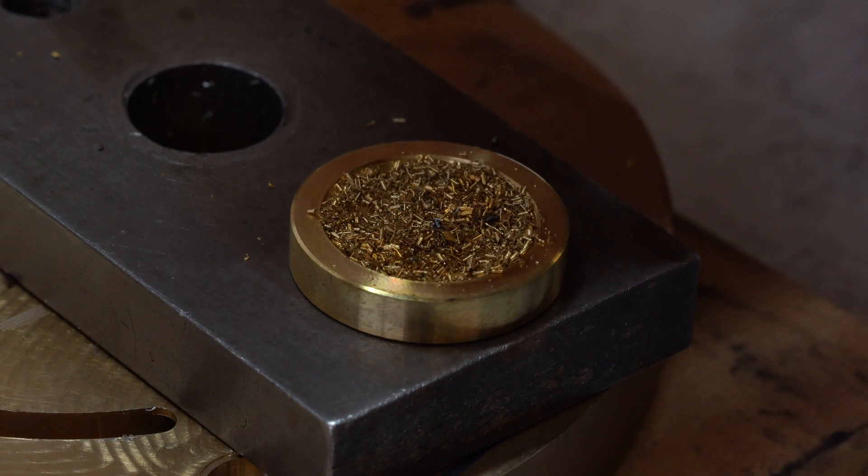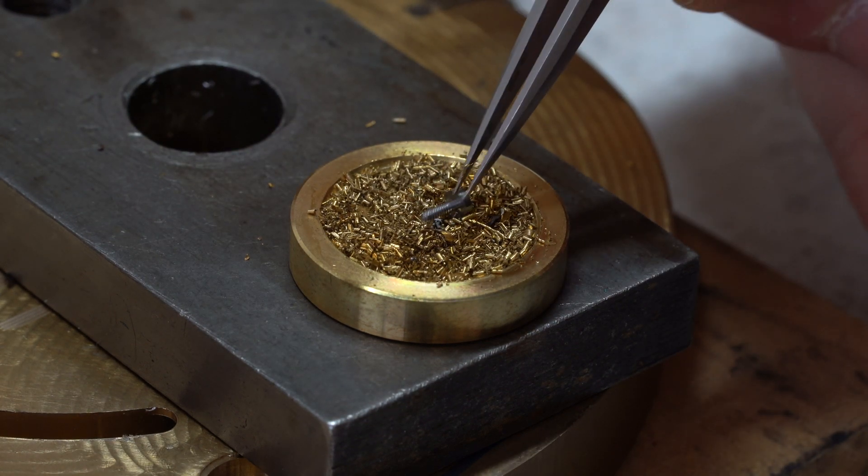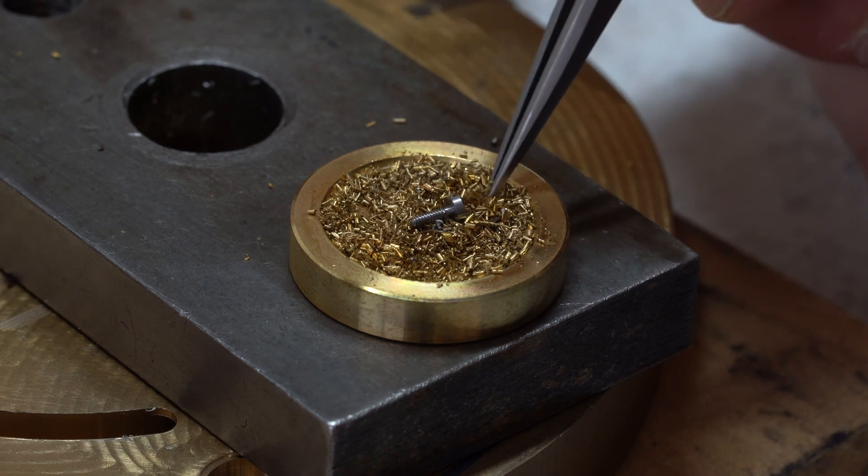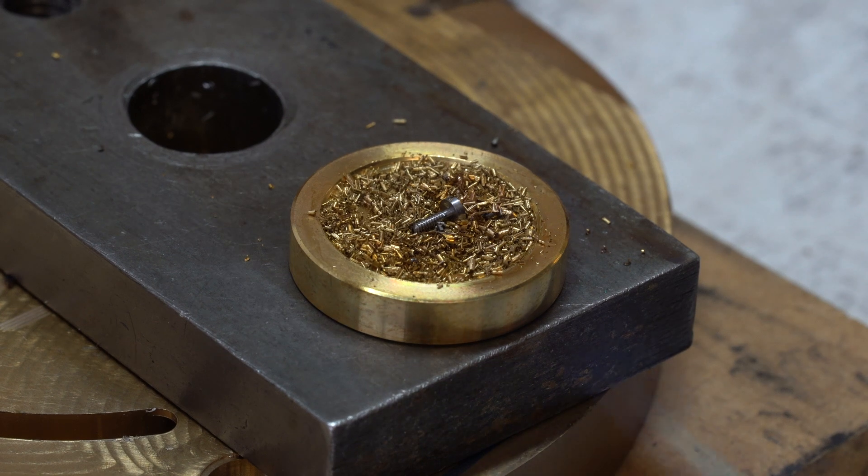Now on to tempering. So I've got some brass filings in a dish here and I want to bring the screw to a purplish brick red. When finally finishing these screws I'm going to be bluing them and I'm going to bring them past that purple brick red to a final purple colour that I'd like to achieve.